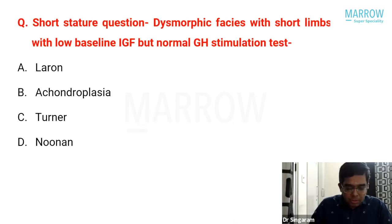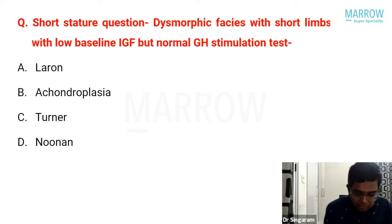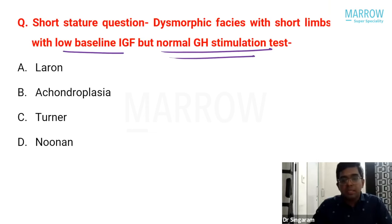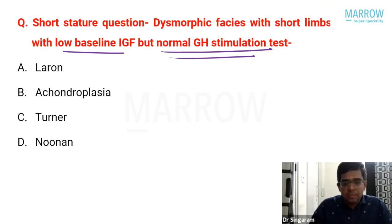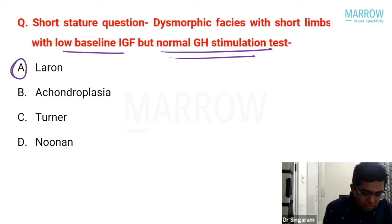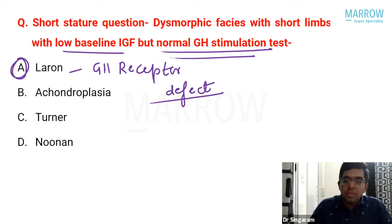The first question is about short stature in a child with dysmorphic facies and short limbs. The child has a low baseline IGF-1 (insulin-like growth factor) and a normal growth hormone stimulation test. The options are Laron syndrome, achondroplasia, Turner syndrome, and Noonan syndrome. All can cause short stature, but the best answer is Laron syndrome, a condition of growth hormone receptor defect.